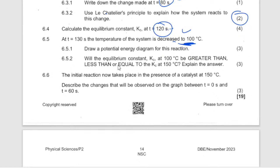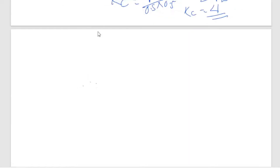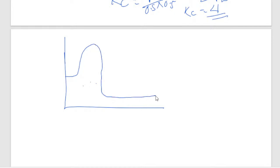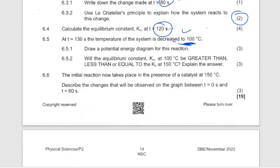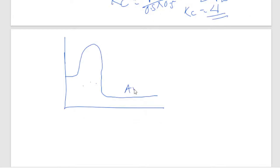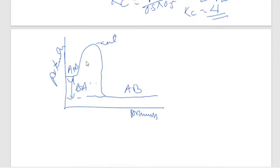Draw the potential energy diagram for this reaction. Since it is exothermic, the energy is lost — the products are at a lower energy level than the reactants. The y-axis is potential energy, x-axis is reaction progress. Label A + B as reactants with a higher energy, activation energy hump, and AB as the product at lower energy.